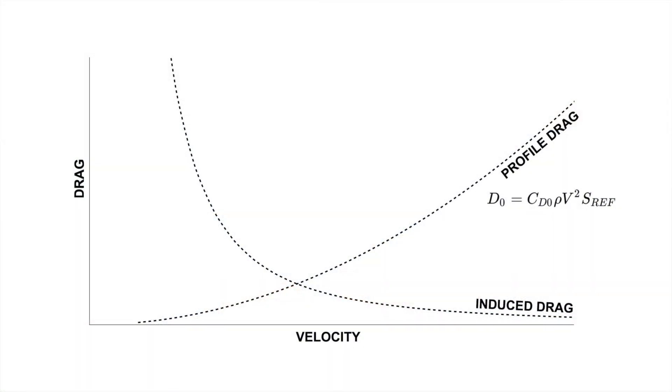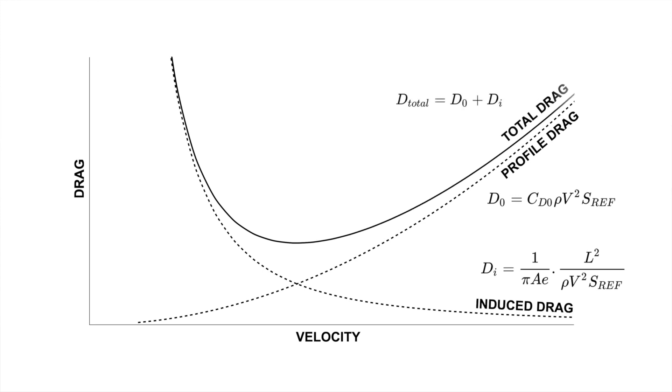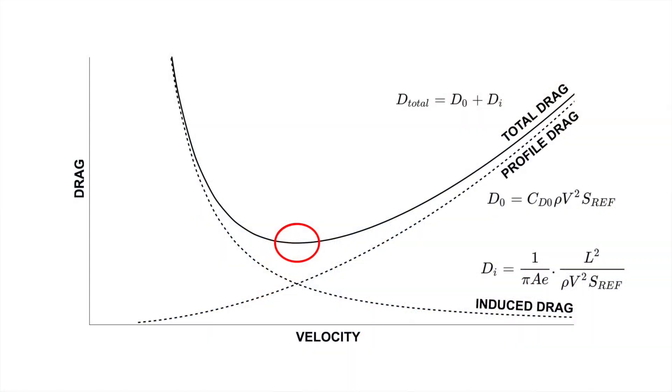The lift-induced drag goes up with the inverse square of the aircraft's speed. So for a fixed-wing aircraft, to fly slowly you need lots of power to overcome high drag, and to fly fast you also need lots of power. Somewhere in the middle there's a sweet spot where we have the minimum amount of drag — where the two components of drag are equal. In straight and level flight, this minimum drag condition is called L over D max, or the maximum lift-to-drag ratio. For a glider pilot, this is the speed that gives maximum horizontal distance for any given amount of height loss.